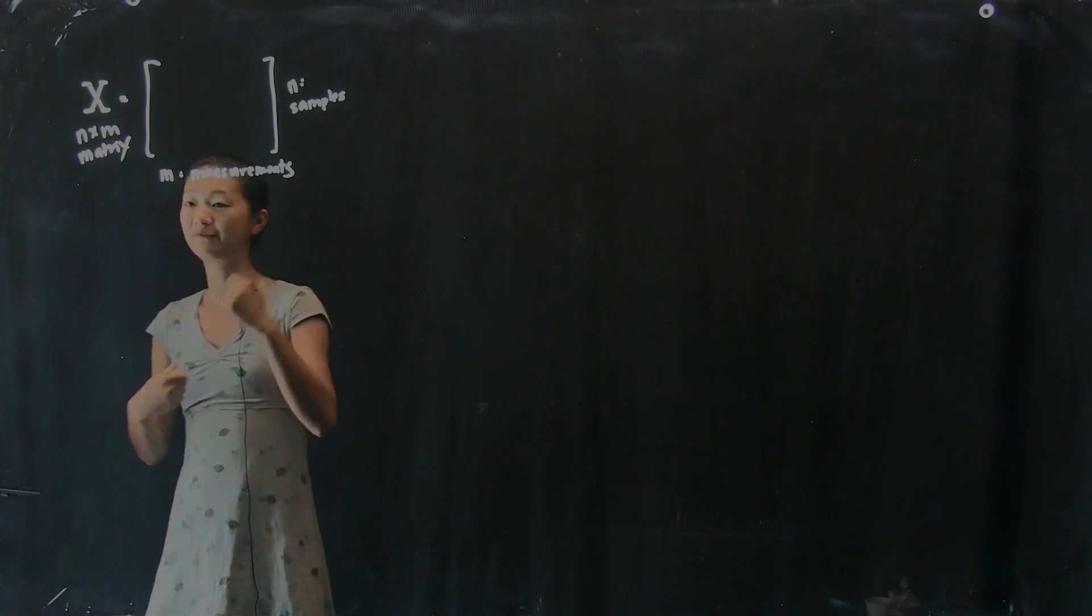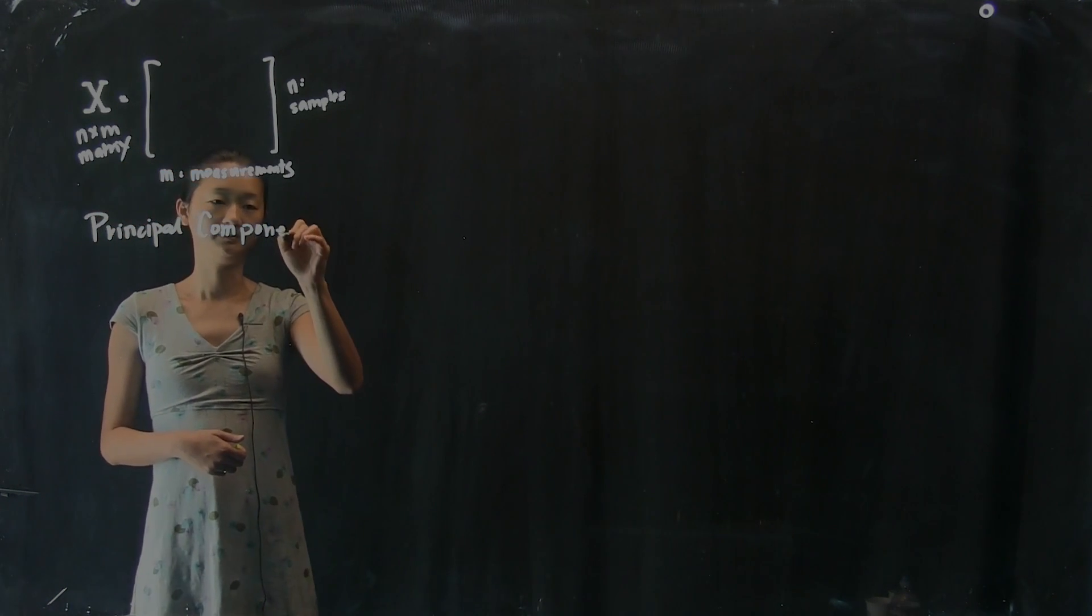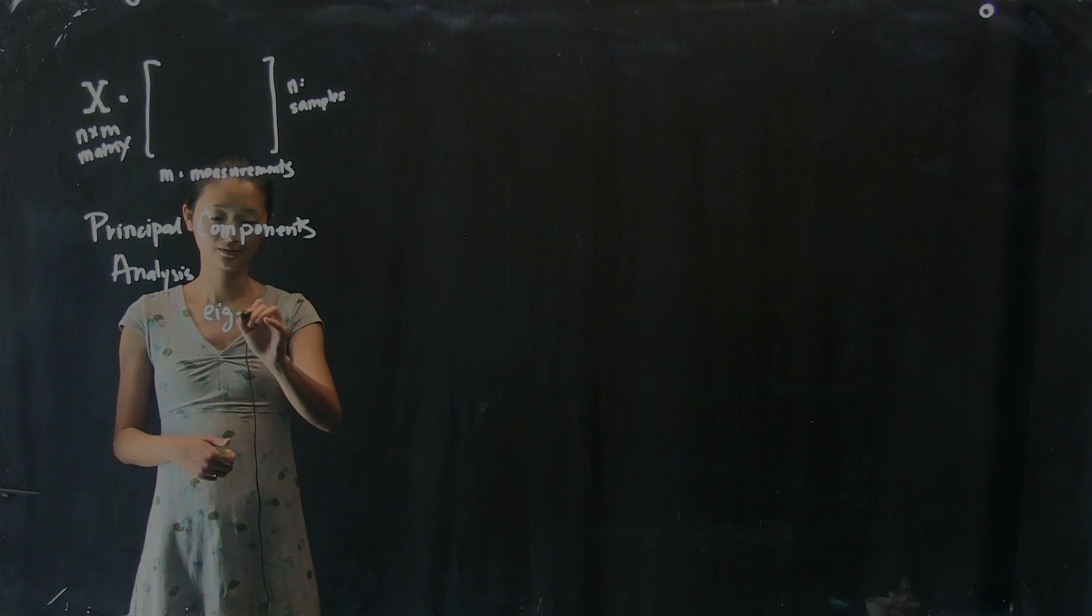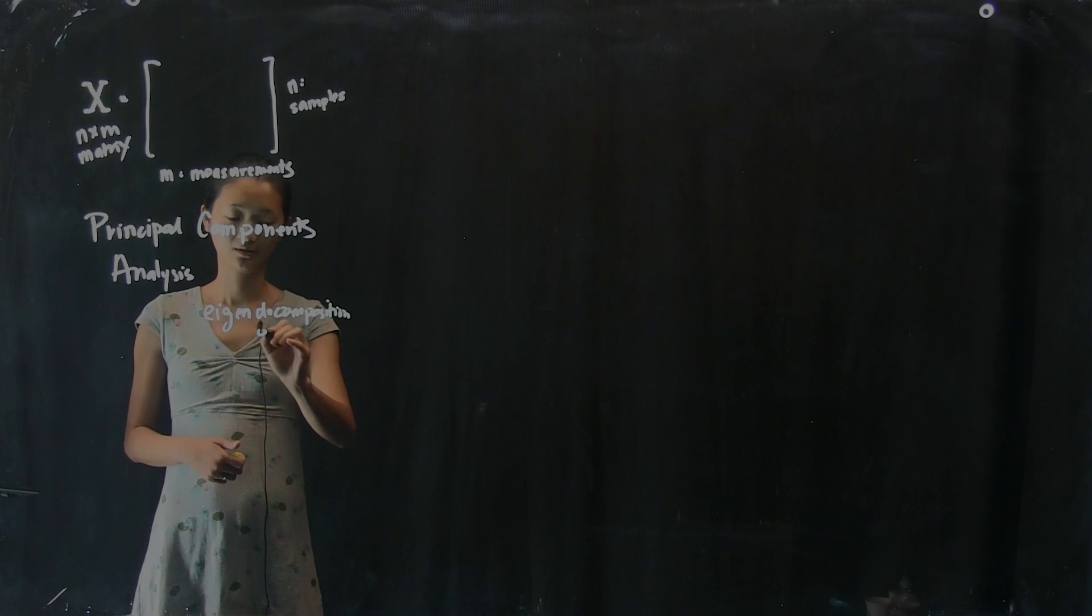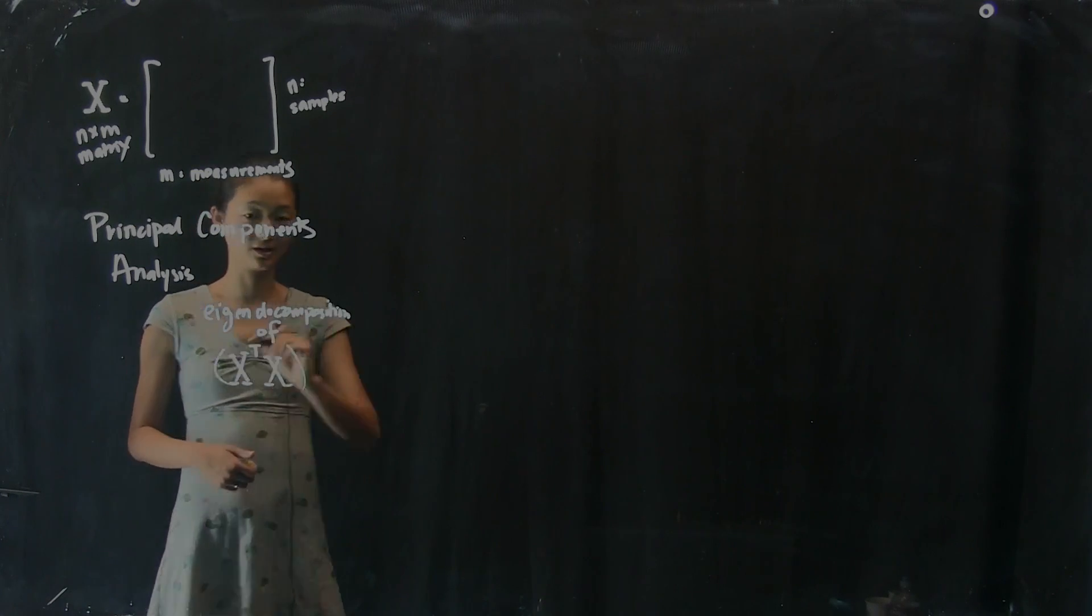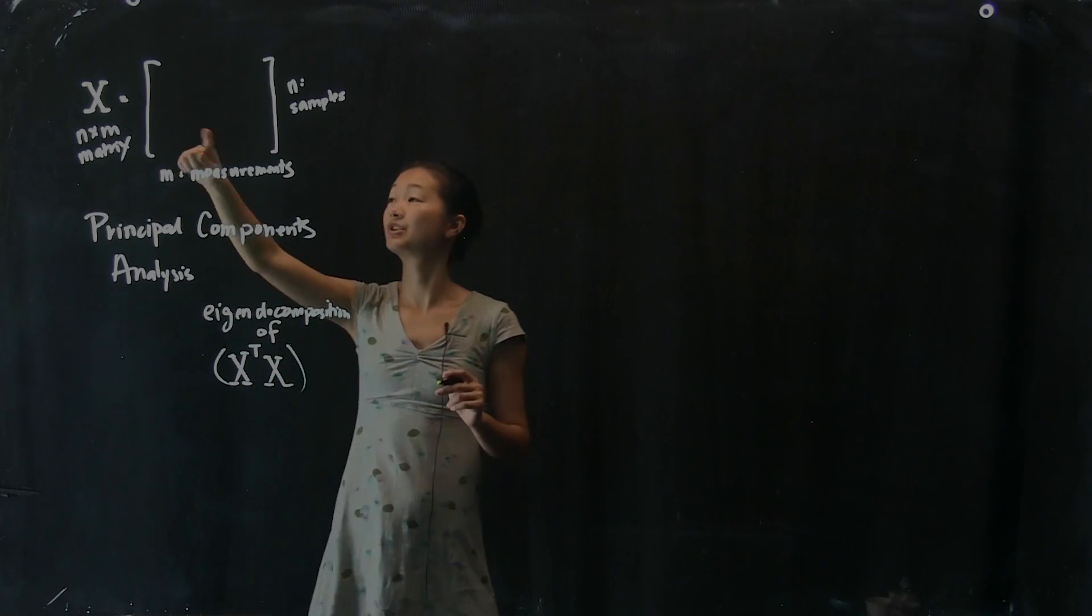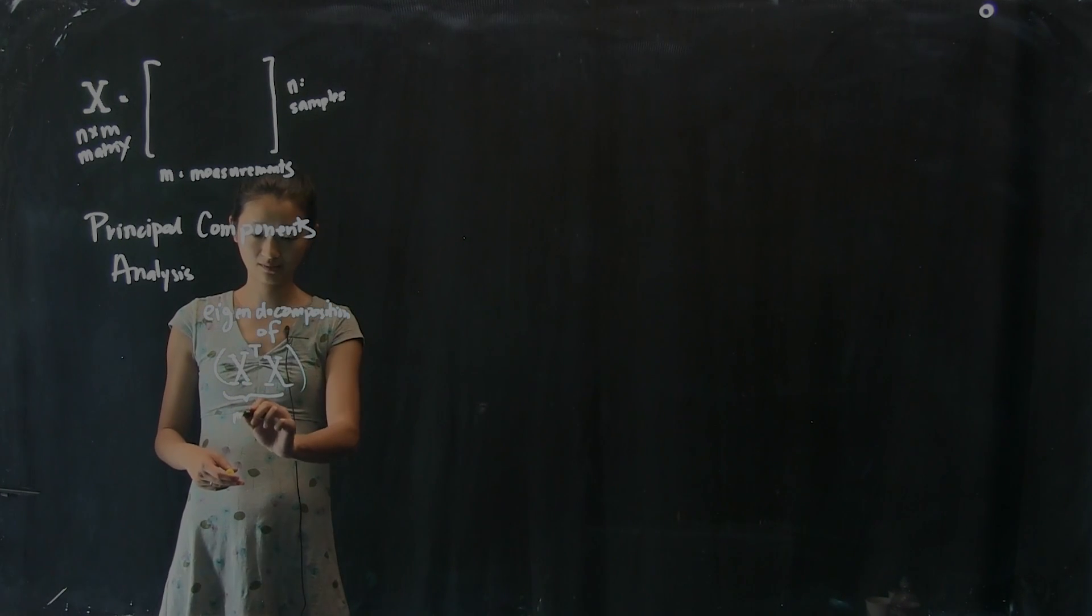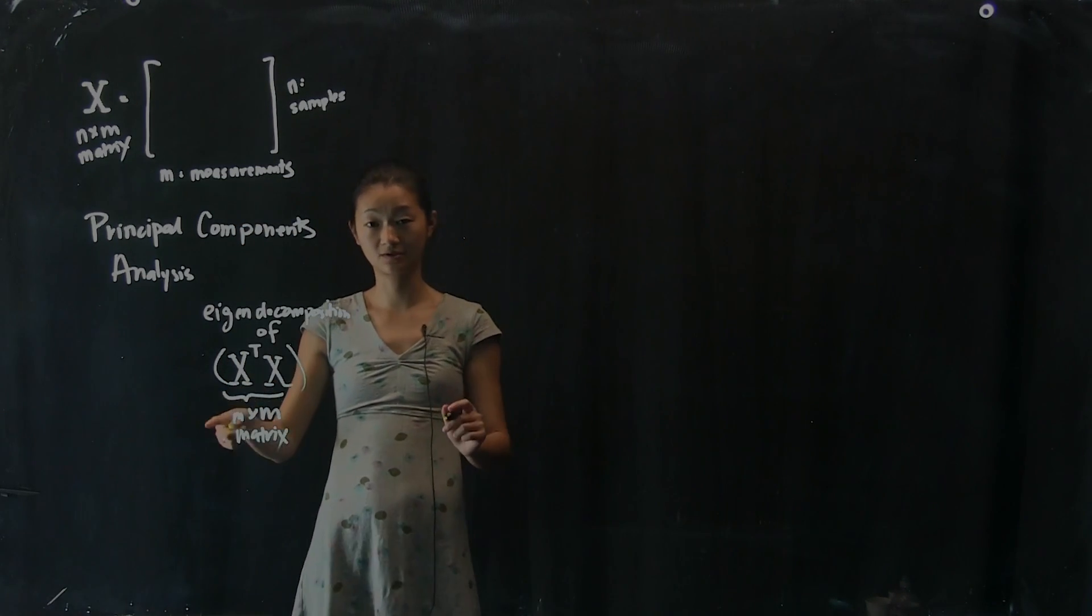So I told you last time briefly that the principal components analysis is defined as the eigendecomposition of the covariance matrix x transpose times x. So we literally have to compute this matrix, which if you look at the dimensions of our data matrix x because it's n by m, if you take x transpose times x, this turns out to be an m by m matrix. So it's a square matrix where the size is determined by the number of measurements we have.